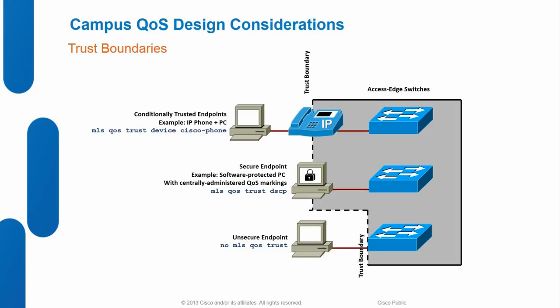There are three trust boundary options: conditionally trust the phone (which remarks PC traffic to zero and sends CoS 3 and 5 to the switch, remapped via CoS-to-DSCP), trust a secured endpoint that has some sort of supplicant, or treat an unsecured endpoint — a standard PC — as untrusted. End users generally should not be trusted because you don't know what they'll do, either on purpose or by accident.